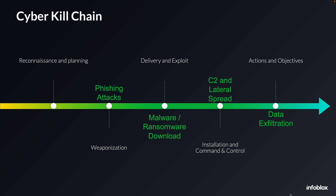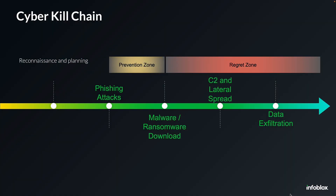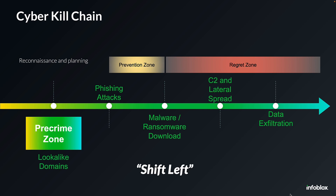The important thing about this entire chain is it comes in a couple of different sections. There is what I call the regret zone — everything that follows the point where you've actually gotten infected. From that point forward, you can block command and control, you can block data exfiltration, but you still have somebody in your environment who's actively compromised and you're fighting against time to remediate. Everything prior to that is the prevention zone — stopping the phishing email, stopping the user from clicking the phishing link. And it's great if you block those things. But wouldn't it be nice to go right back to the earliest stage, the reconnaissance and planning stage — what I'm calling the pre-crime zone.